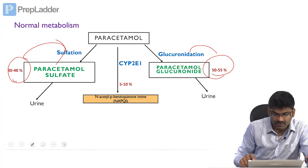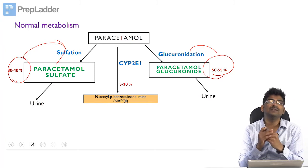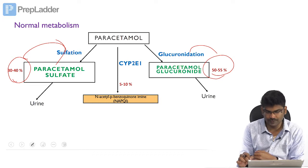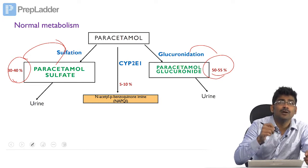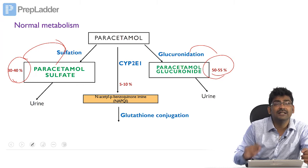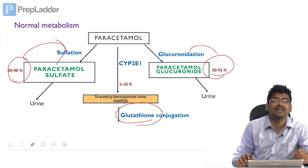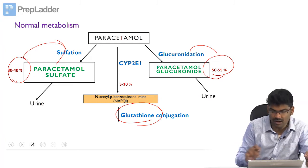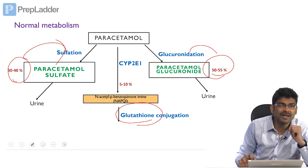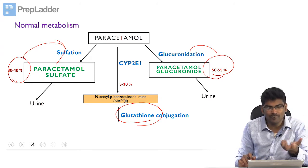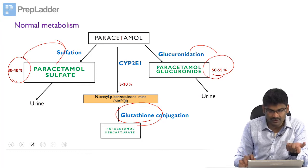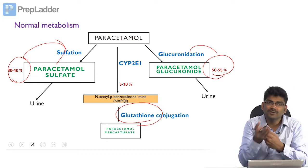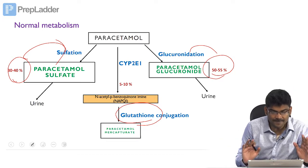In this minor CYP450 pathway, N-acetyl para-benzoquinone imine (NAPQI), a highly reactive molecule, is produced. This reactive molecule must be detoxified by another conjugation reaction. Here, glutathione is used. Paracetamol mercapturate — involving the S-H group of glutathione (gamma-glutamyl-cysteinyl-glycine) — is produced, which is non-toxic and is excreted in the urine.